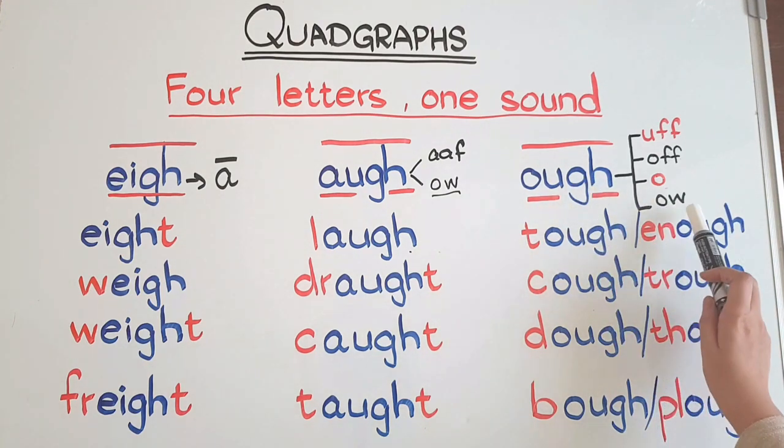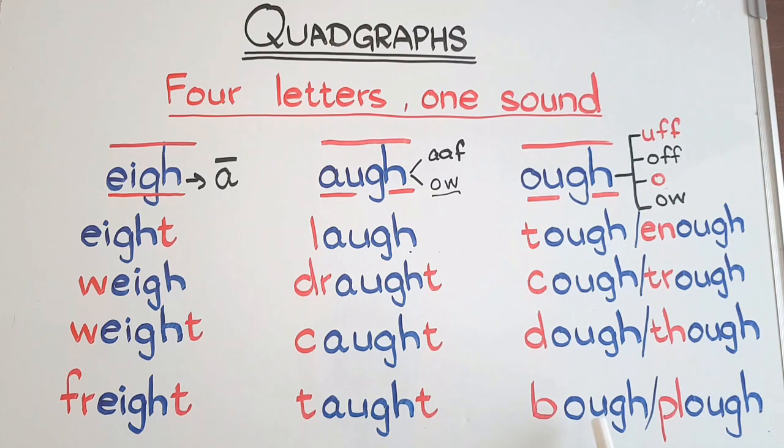O-U-G-H as 'ow': bough - b-ow. A bough is a big branch of a tree. Plough - pl-ow. The farmer ploughed the field.